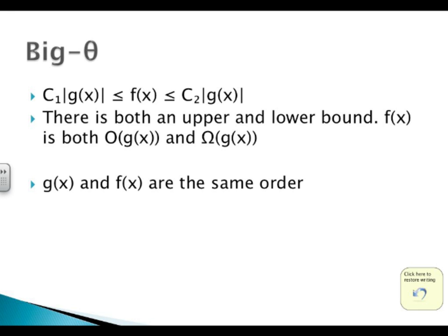Now we have Big Theta. We have constant c1 times the absolute value of g of x is less than or equal to f of x, which is less than or equal to a different constant c2 times that same absolute value of g of x. So there's both an upper and lower bound — f of x is both Big O of g of x and Big Omega of g of x. In this case, you can say that g of x and f of x have the same order.